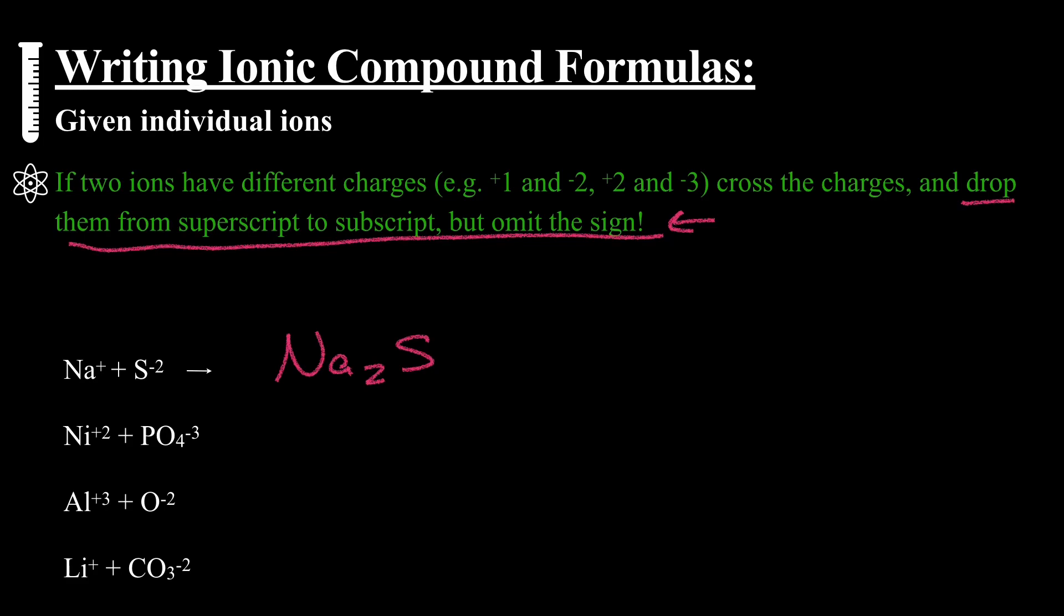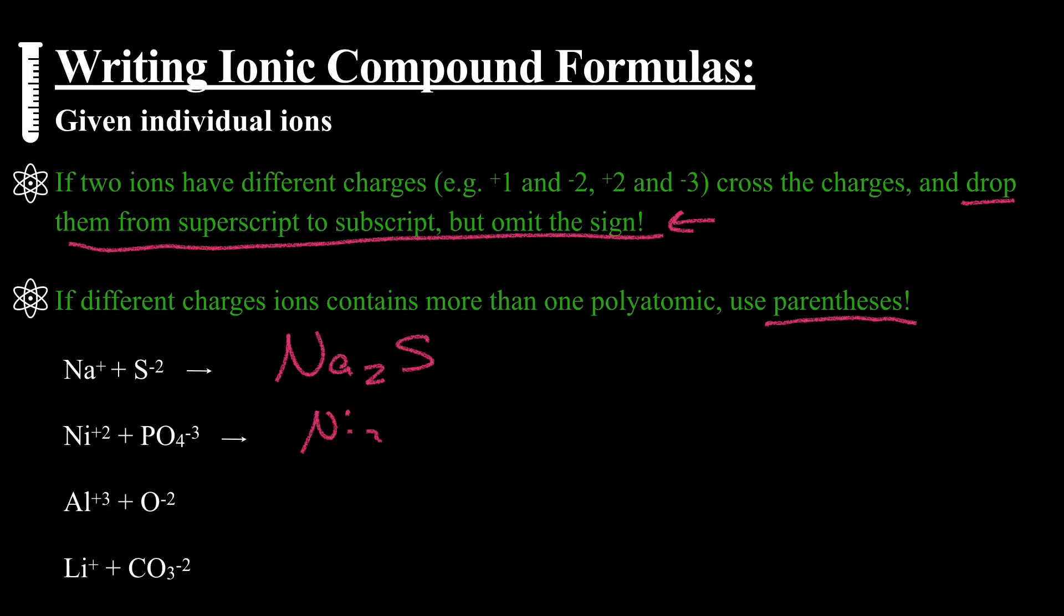Ni plus two, plus PO4 minus three. The two from the nickel goes onto the polyatomic, and now because we have more than one polyatomic, we need to house that with parentheses. So the two would go on the outside of the parentheses of the PO4.